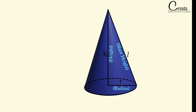If you observe, the height h of this cone is making a right angle with the circular base. That is why this cone is known as a right circular cone — this angle is 90 degrees. This is the same fundamental we have seen in the cylinder, that is a right circular cylinder, where the height of the cylinder also makes a 90-degree angle with the bottom plate.